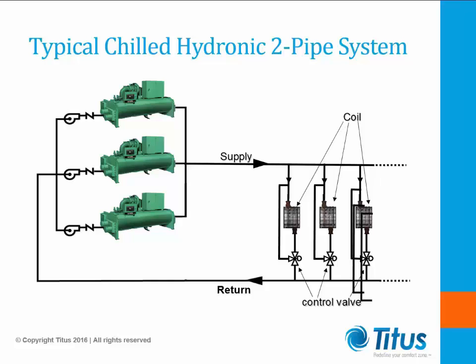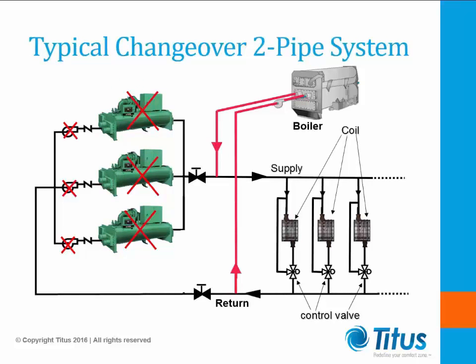In a two-pipe fan coil system, where the same fan coil is used for cooling or heating by changing the system over is called a changeover system. Typically, the change to heating occurs sometime in the fall and will vary by region. For the spring and fall period, where you may find the need to do both cooling and heating based on the zone or time of day, supplemental electric heat is a good compromise.